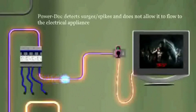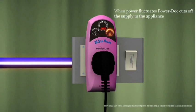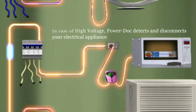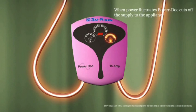PowerDoc efficiently detects surges or spikes and restricts the current from flowing to the electrical appliance. When there is even a slight fluctuation, PowerDoc instantly cuts off supply to the appliance, and as the voltage condition is normal, it reconnects your TV. In case of high voltage, when the current flow increases, PowerDoc again disconnects your microwave, and as the voltage condition comes to normal, it reconnects the appliance.